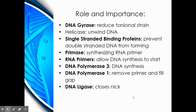Everything within replication has a role. Before the sites of replication, DNA gyrase functions to reduce torsional strain ahead of the replication fork. Next, helicase is seen attached at the replication fork to break the hydrogen bonds, causing the DNA strands to separate. The single-stranded binding proteins coat the single-stranded DNA to prevent double-stranded DNA from forming by protecting and stabilizing it.